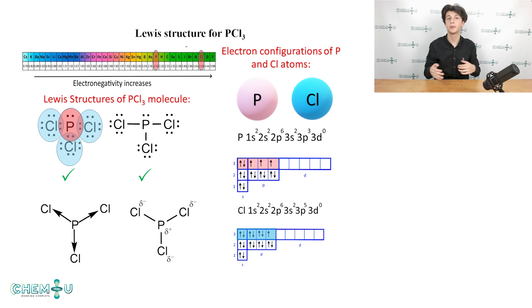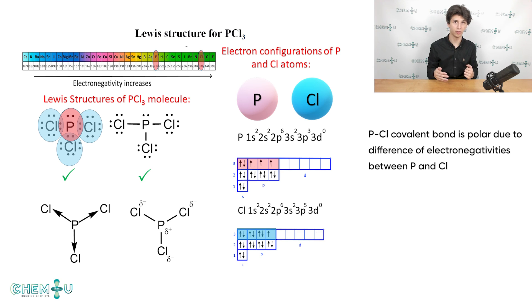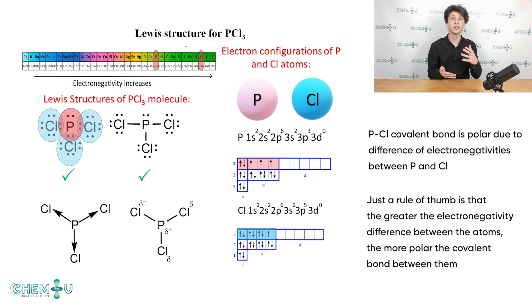And here's the phosphorous chloride, PCl3 from our previous video. P is less electronegative than chlorine, meaning that electrons are pulled stronger by chlorine. It leads to the unequal distribution of the electron density, so there is a more negative charge on chlorine atoms and a more positive charge is located on phosphorus. That's why we can name the P-Cl bond polar and we can indicate it by using arrows or deltas as shown on the slide. Just a rule of thumb is that the greater the electronegativity difference between the atoms, the more polar the covalent bond between them is.